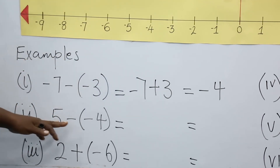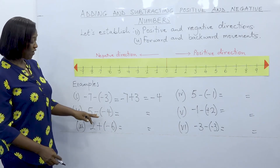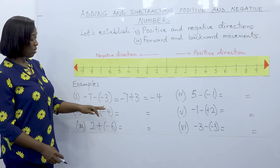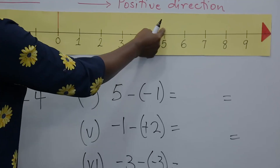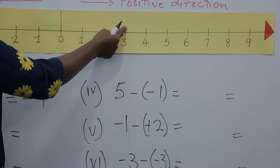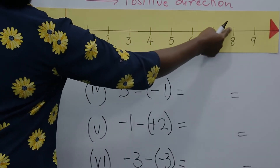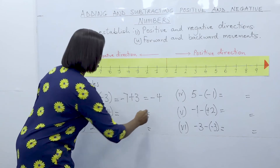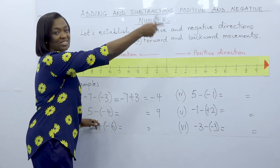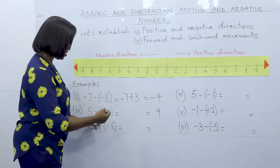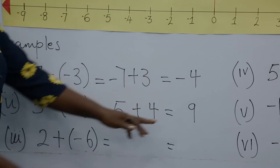Next example: five minus minus four. We stand at five, face the negative direction, and go backwards four steps: one, two, three, four — that lands us at nine. Facing the negative direction but going backwards is actually going forward. So five minus minus four is five plus four, which is equal to nine.